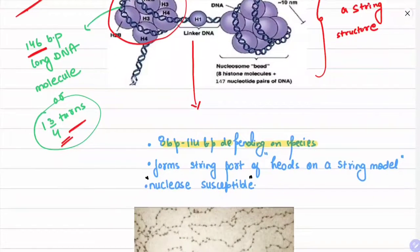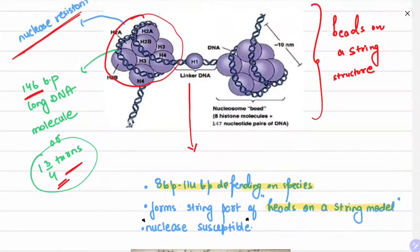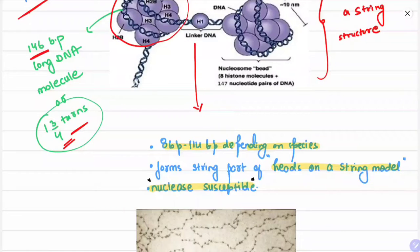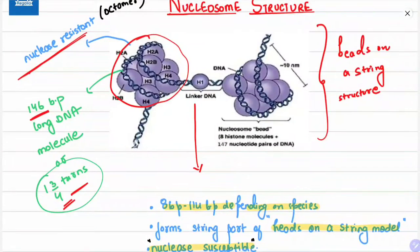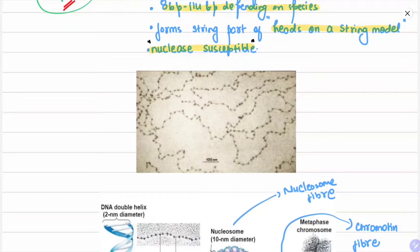The linker DNA is 8 to 214 base pairs depending on species and forms the string part of the beads-on-a-string model. The linker DNA and H1 histone are nuclease-susceptible, while the histone core plus the wrapped DNA is nuclease-resistant. Nuclease is an enzyme that breaks nucleotides.